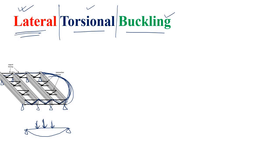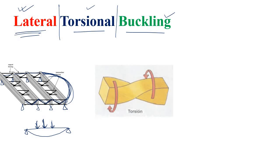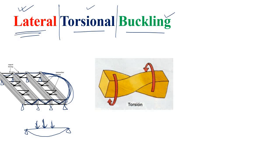Now, what is torsion? Torsion means a twist. If you have an object and you apply two forces of the same magnitude but opposite direction with respect to its center of gravity, the object will try to rotate — and this rotation is simply torsion.